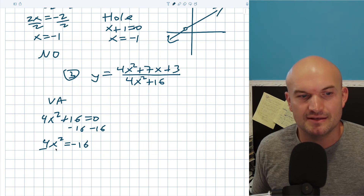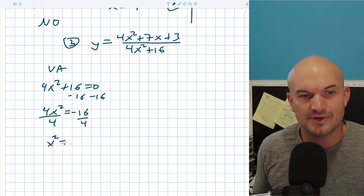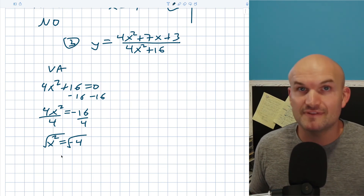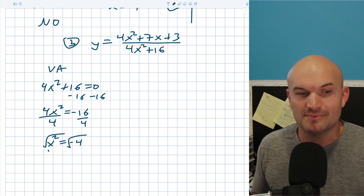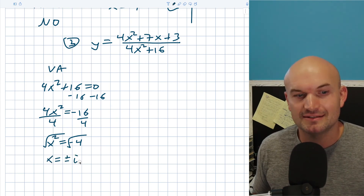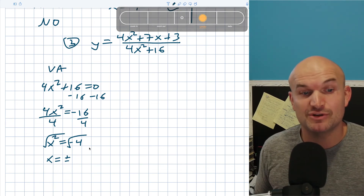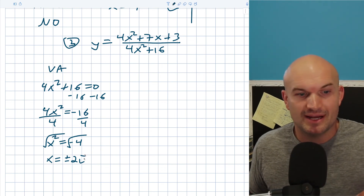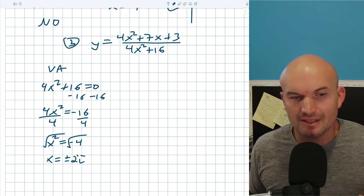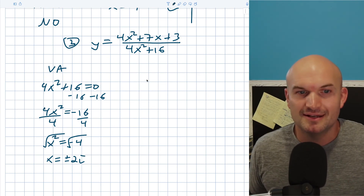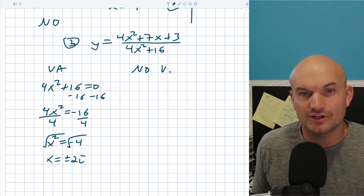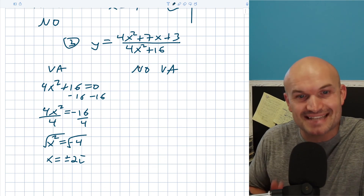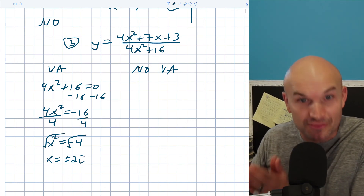When you introduce the square root of a negative number, that's not going to be part of the real number system. So x equals plus or minus 2i. We need the complex number system to take the even root of a negative number. Since we can't graph plus or minus 2i on the real number line, there are no vertical asymptotes — we must have a real number for a vertical asymptote. So there you go: three examples of rational expressions with no vertical asymptotes. I hope it was helpful and I look forward to seeing you in the next video.